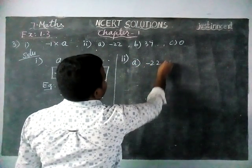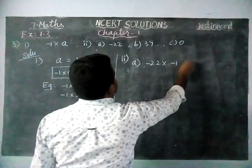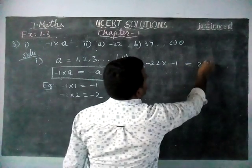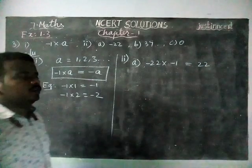Option a: Minus 22 into minus 1. Minus into minus is plus sign, 1 into 22 is 22. So, plus 22 we will get.